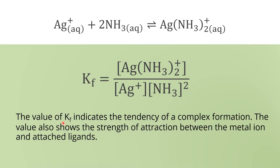The value of Kf indicates the tendency of complex formation. If the equilibrium moves to the right, or Kf is high, it shows that the metal ion and ligand really like to be together in this form. A high Kf means you have a high concentration of complex ion, which also shows the strength of attraction between the metal ion and the attached ligand — they form a strong bond, shown by a high concentration of product and a high value of Kf.